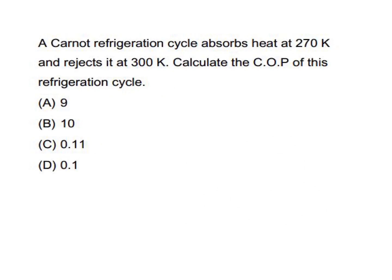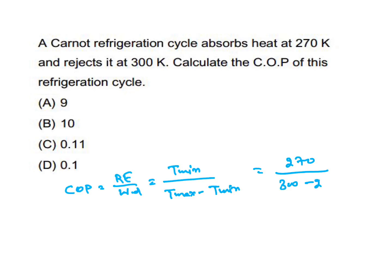A Carnot refrigeration cycle absorbs heat at 270 K and rejects it at 300 K. Calculate the COP. Carnot COP = refrigerating effect / work done = T_min / (T_max − T_min) = 270 / (300 − 270) = 270 / 30 = 9. Option A, 9, is the answer.